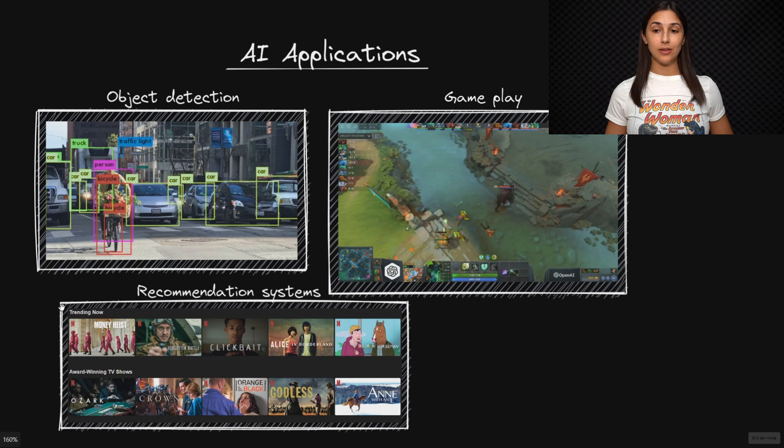We also have recommendation systems like those used by YouTube or Netflix, which recommend to us which shows or videos to watch next. These are oftentimes using artificial intelligence underneath the hood to choose these videos that they recommend to us. These are just a few of the many AI applications already in use today.